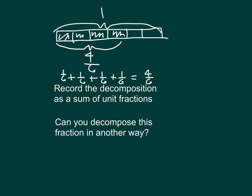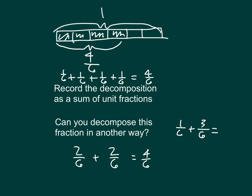The question now is: can you decompose this fraction in another way? How about the sum of two fractions? Well, one, two, three, four-sixths — could I just take these two? That would be two-sixths plus two-sixths, which does equal four-sixths. Is there another one? If I had one-sixth, how many more sixths would I need? Three. One-sixth and three-sixths gives you four-sixths.